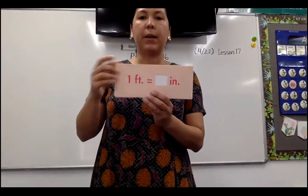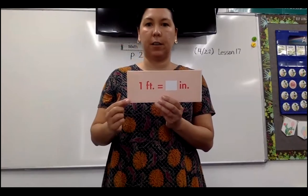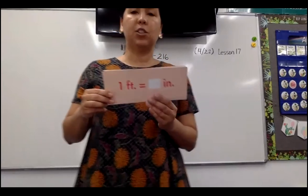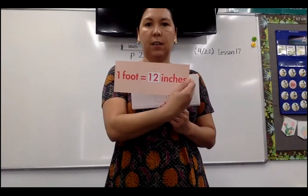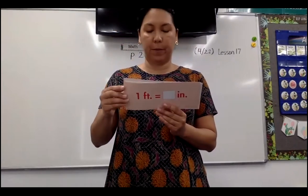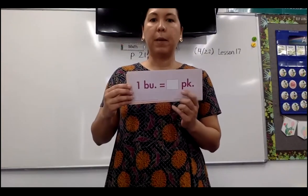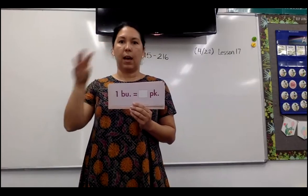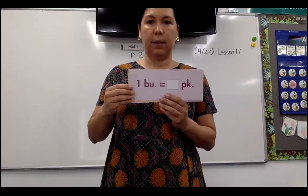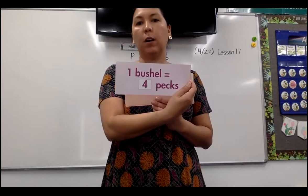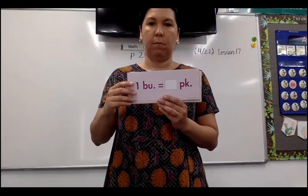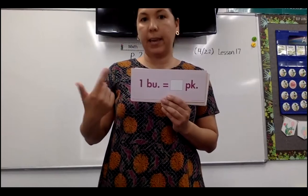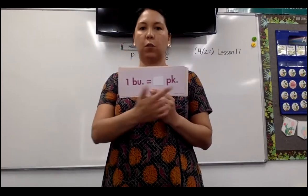How many inches in a foot? Think of a regular ruler or your dad's foot. Twelve. Twelve inches in a foot. How many pecks in a bushel? Remember, think of the chicken. Four. Four pecks in a bushel. Remember a peck is two gallons, so this would technically be eight gallons. Four pecks in a bushel.